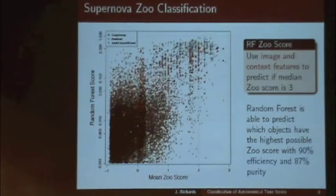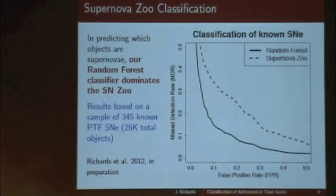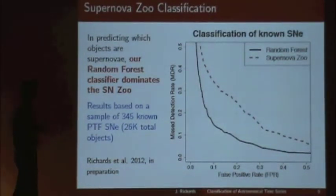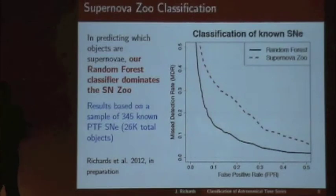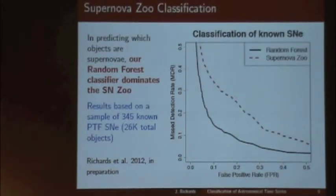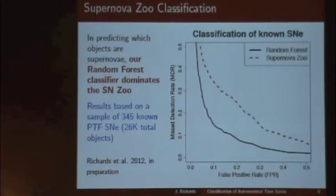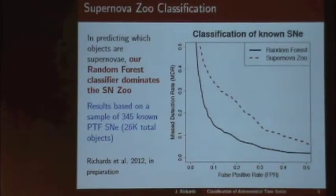This takes on the order of seconds instead of four hours. Interestingly, in terms of finding real supernovae, we actually do a better job in terms of false positive detection — we dominate the classifier constructed just off the Supernova Zoo scores. We've trained off of their scores without any knowledge of which things were actually supernovae. It turns out we do better, presumably because we do something in a self-consistent way, whereas different people can opine differently on the same object. The random forest is self-consistent.